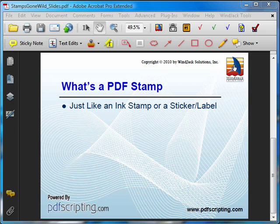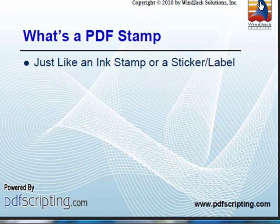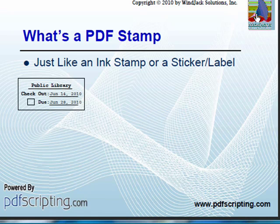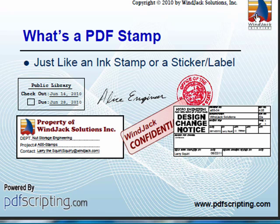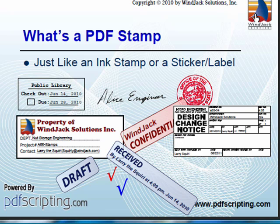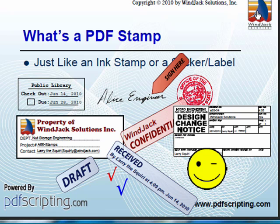PDF stamps are loosely based on the idea of ink stamps. Ink stamps are everywhere in the paper document world — they're ubiquitous. They're used to place dates on documents, signatures, certifications, to label a document with company info, to mark a document as confidential, or to stamp any other kind of special data onto a document. There's another workflow tool that stamps are loosely based on, and that's the sticker — little sticky pieces of paper or tape placed on a page to indicate where it should be signed or initialed, or to put a label onto a document.